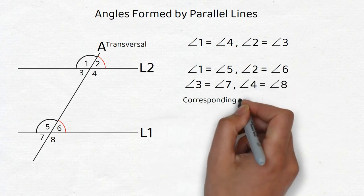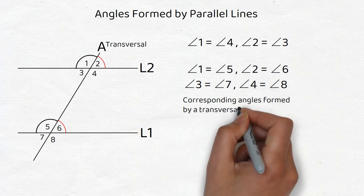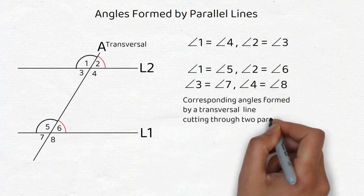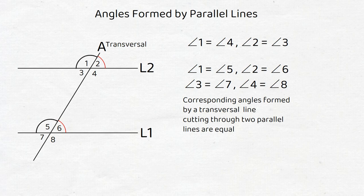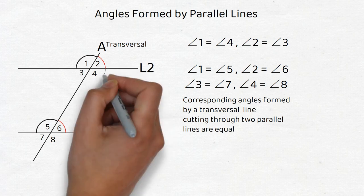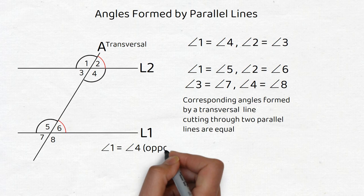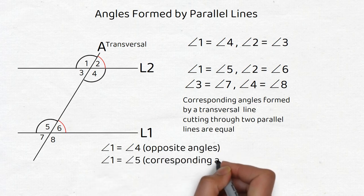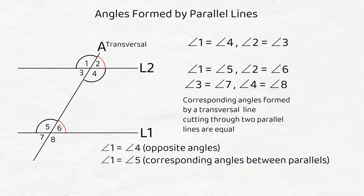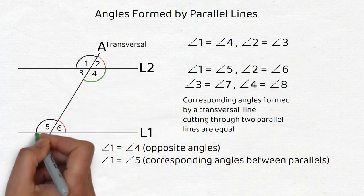We can say that the corresponding angles formed by a transversal line cutting through two parallel lines are equal. Now, since ∠1 = ∠4 because they're opposite angles, and ∠1 = ∠5 because they're corresponding angles between parallels, it follows that ∠4 = ∠5.